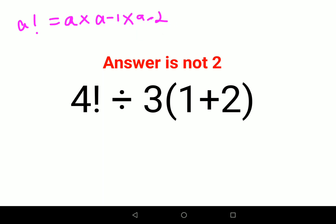You have to keep doing this until you reach the value of 1. So let's do 4 factorial first. 4 factorial is 4 into 3 into 2 into 1, which is 4 into 3 is 12, 12 into 2 is 24, into 1 is 24. So now this is 24 divided by 3.